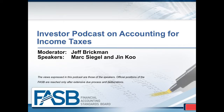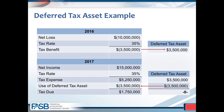Those benefits or expenses could happen in the following year's tax return or many years down the road. To illustrate this concept, let's look at an example — a net operating loss, or NOL, which is a common type of deferred tax asset. Assume in 2016 a company loses $10 million and the tax rate is 35%. In some jurisdictions, the company will be able to offset income in future years with that loss, creating a deferred tax asset of $3.5 million — the $10 million loss times the 35% tax rate. This represents a benefit the company expects to receive on its tax return in a future year.